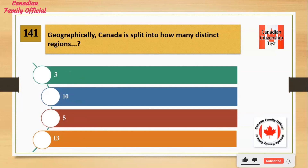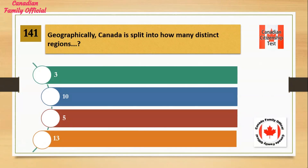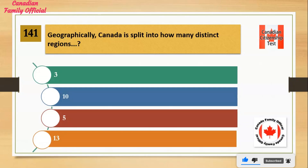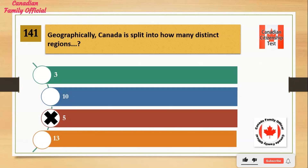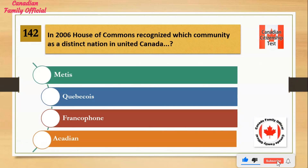Geographically, Canada is split into how many distinct regions? Number 1: 3. Number 2: 10. Number 3: 5. Number 4: 13. And the answer is 5.